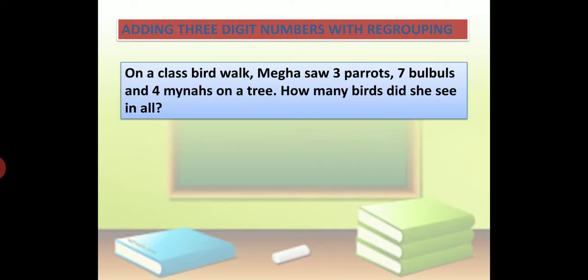On a class bird walk, Megha saw 3 parrots, 7 bulbuls, and 4 mynahs on a tree. How many birds did she see in all?